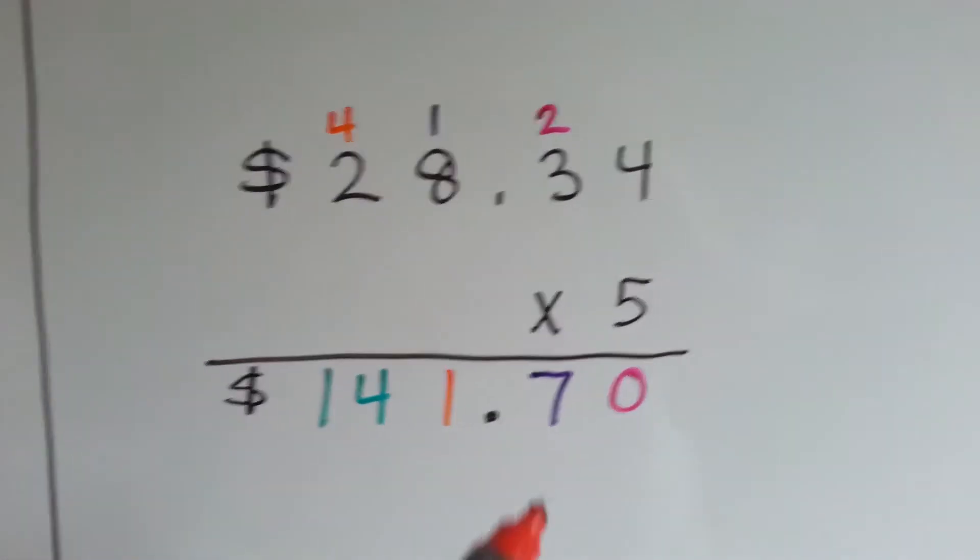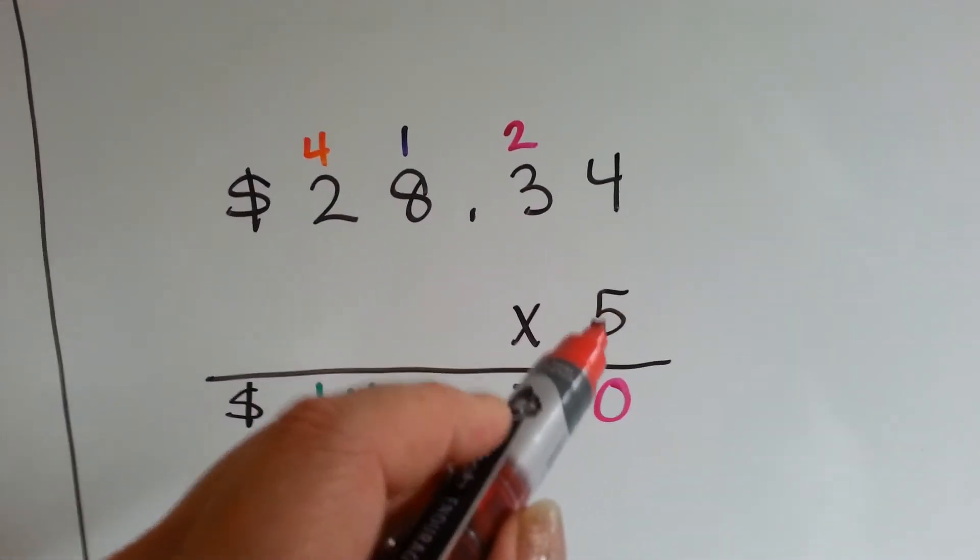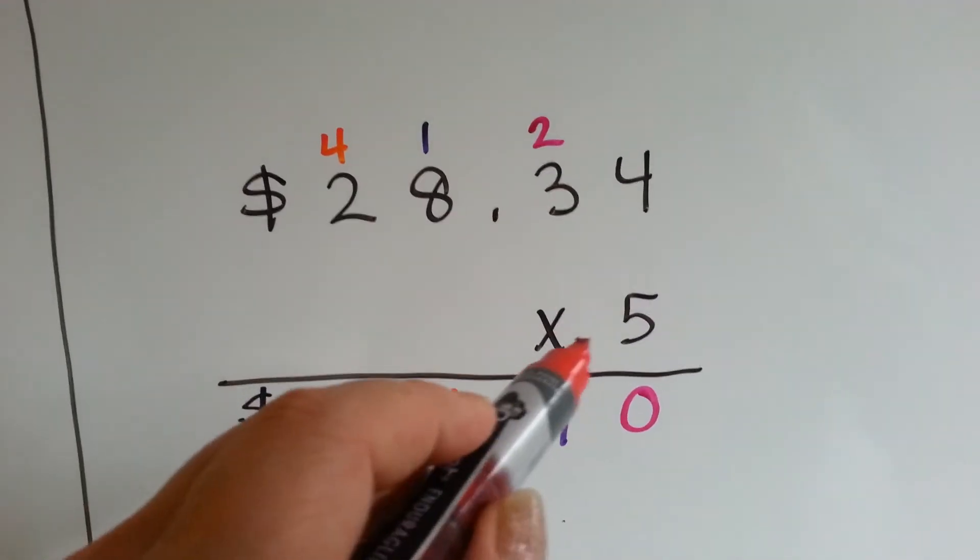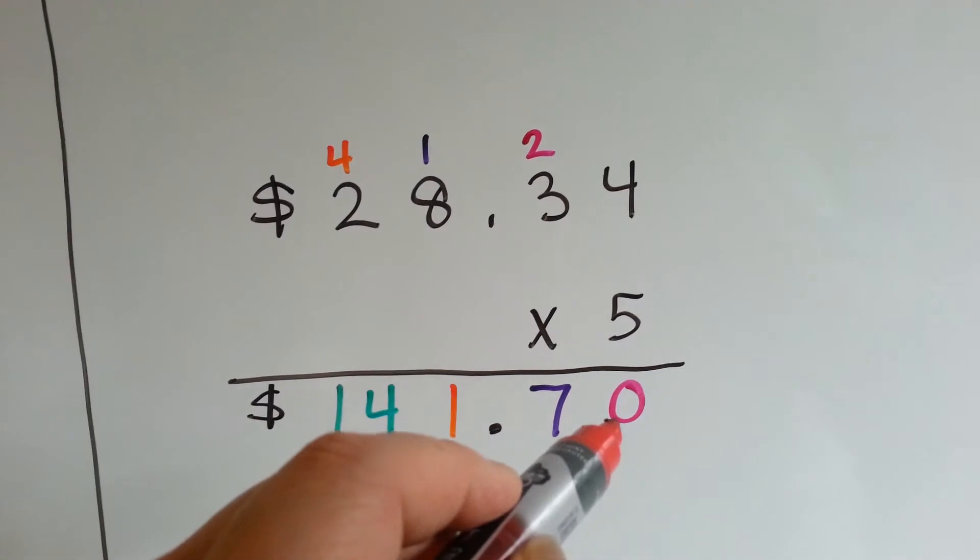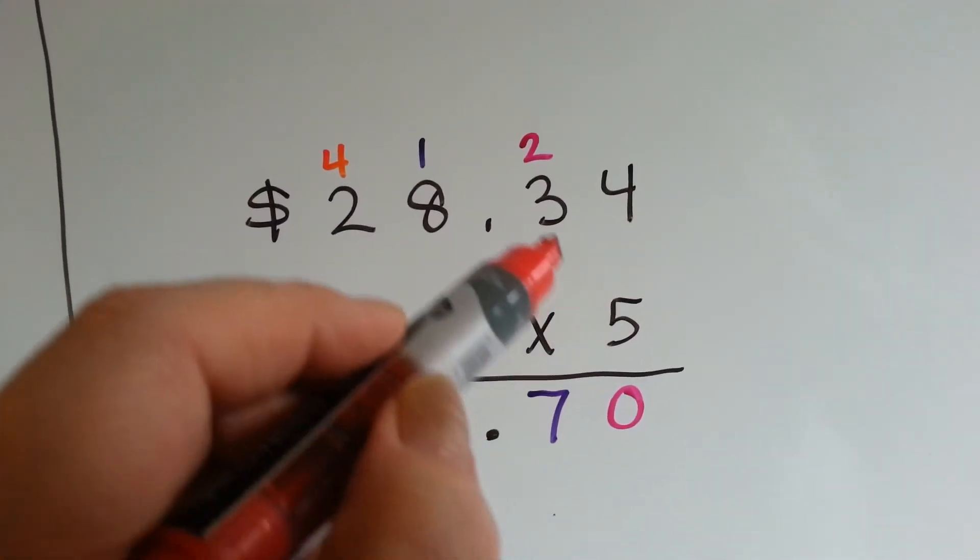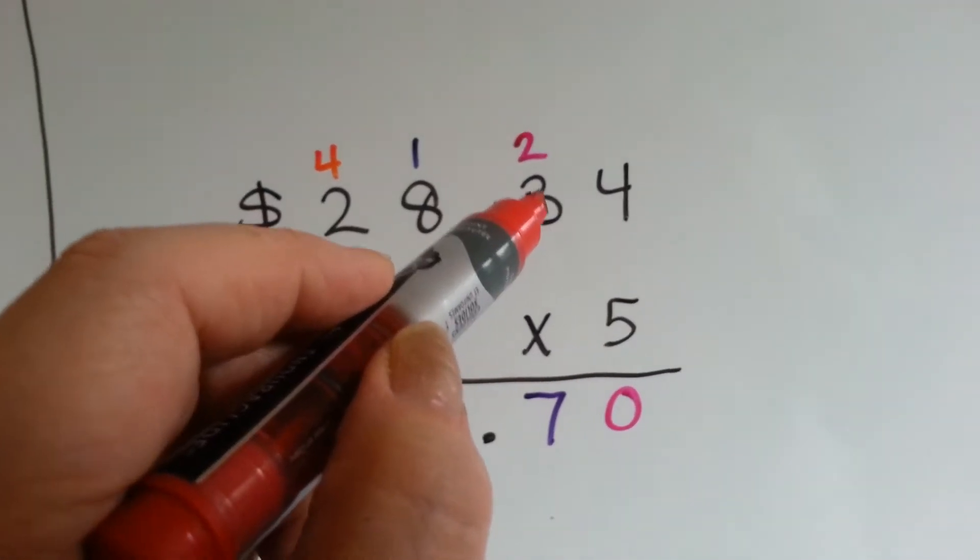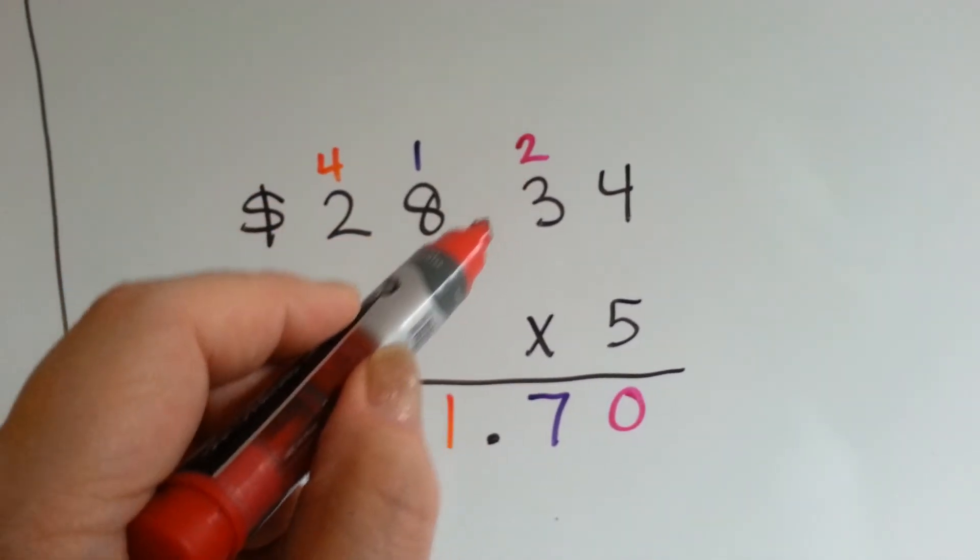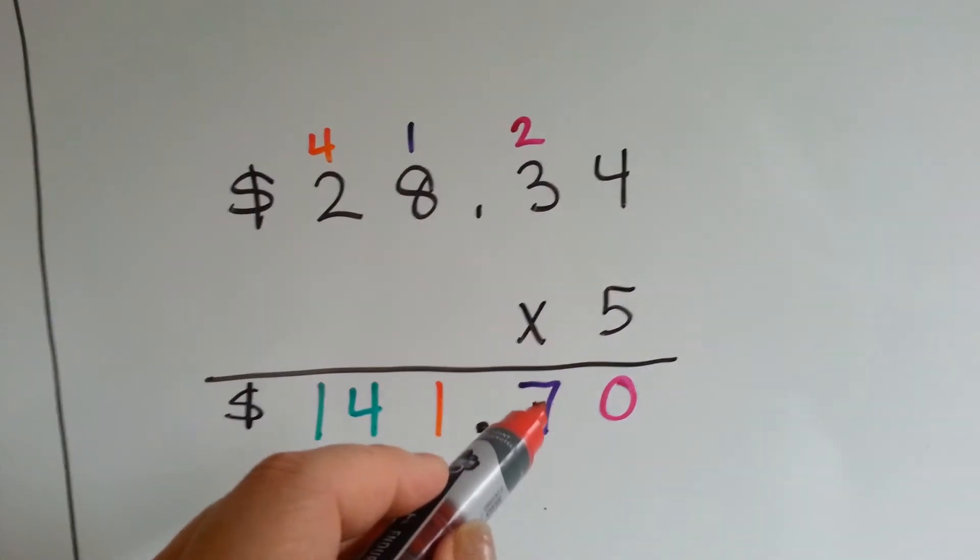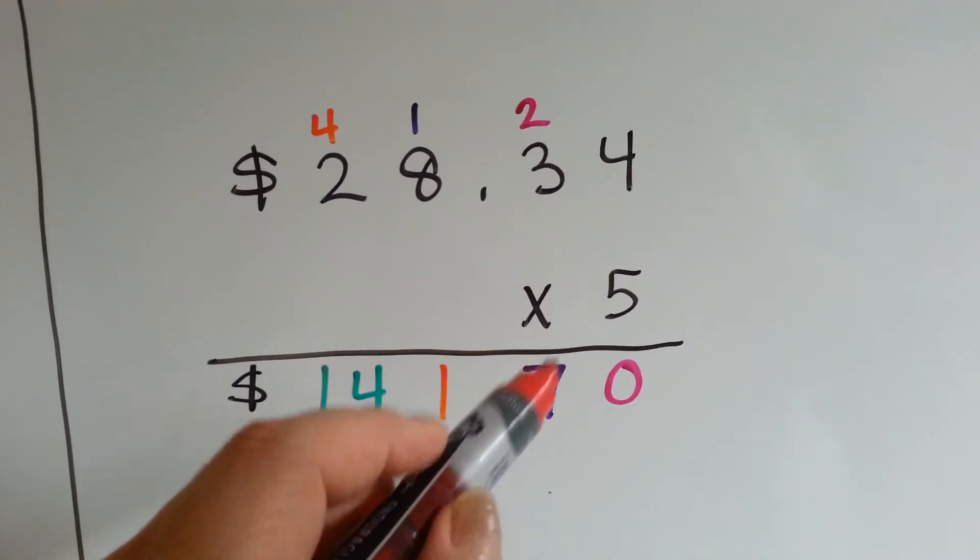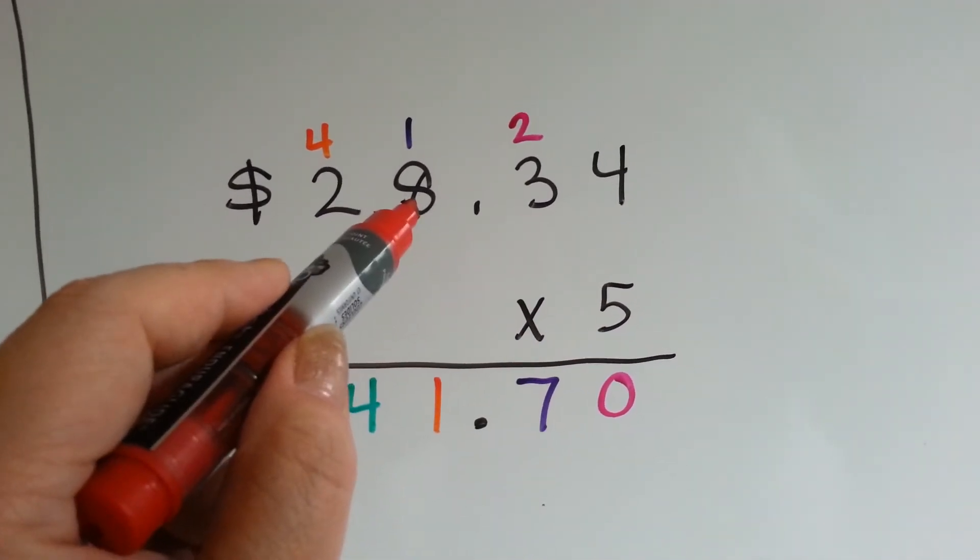Now, let's see how we would do it by distributing this 5. This is the regular way to do it. 5 times 4 is $20. We carry the 2 and put the 0 down. 5 times 3 is $15, and we add the 2. 16 is $17. Put the 1 here to carry it over and put the 7 down here for the 17.